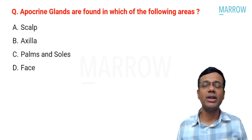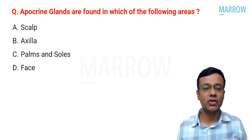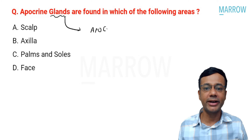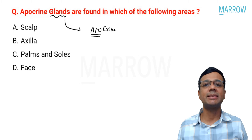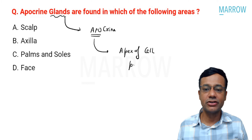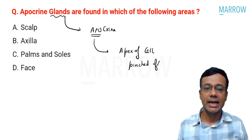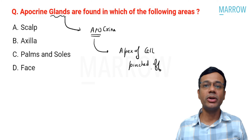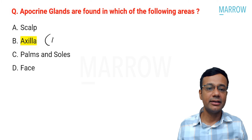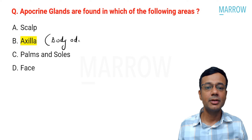Apocrine glands are found in which of the following areas: scalp, axilla, palms and soles, or face? Apocrine glands are named for their method of secretion — apocrine — meaning the apex of the cell is pinched off. They are the body odor-producing glands. The correct answer is axilla, and they are responsible for body odor.